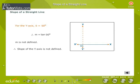For the y-axis, theta is equal to 90 degrees. Therefore, M is equal to tan 90, which is not defined. Therefore, the slope of the y-axis is not defined.